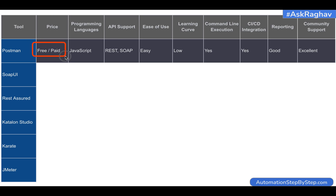Let us start with Postman. Postman comes with free and paid versions. I have been using Postman a lot and I have found that you can create your complete API automation testing project using the free version. There are some higher-tier features — monitors, call limitations, etc. — that require the paid version, but for a single user or a small team, the free version covers your complete API testing needs.